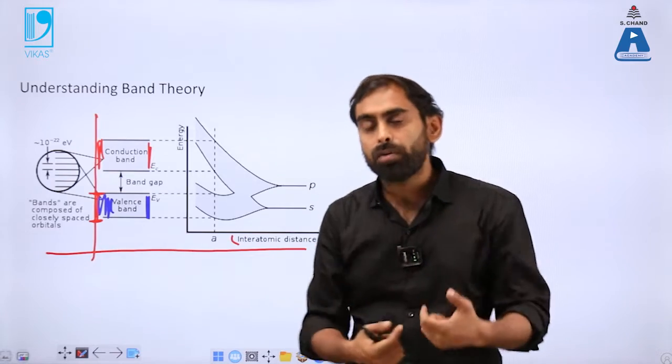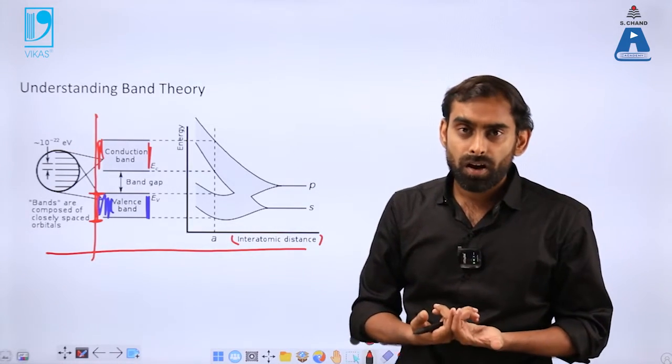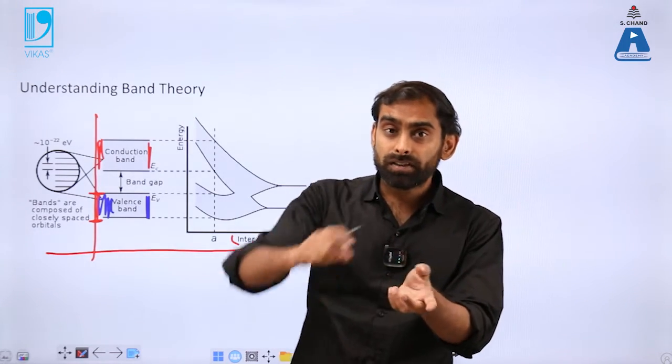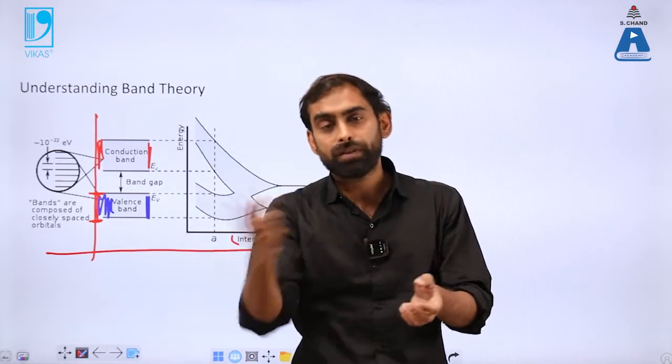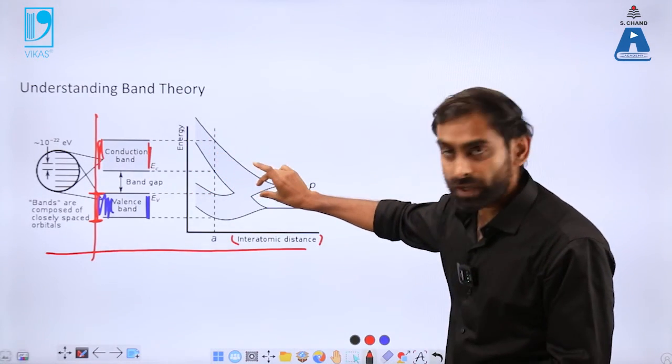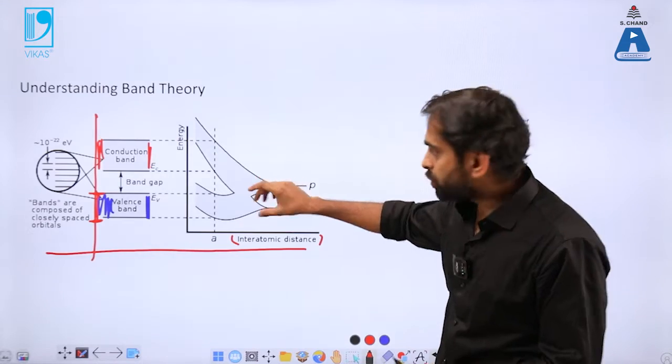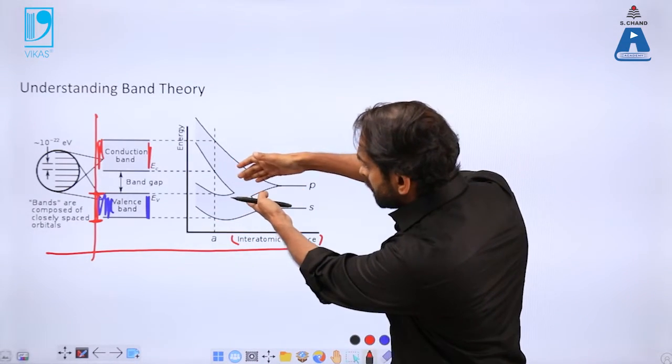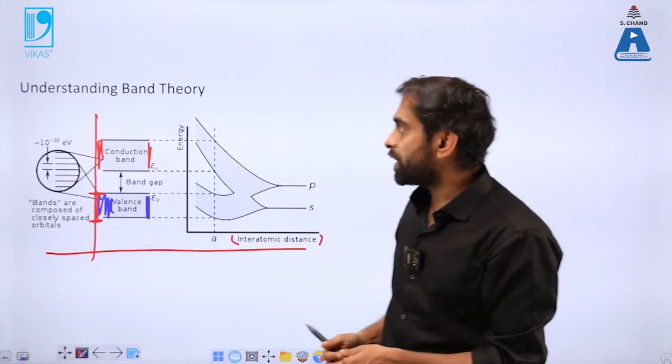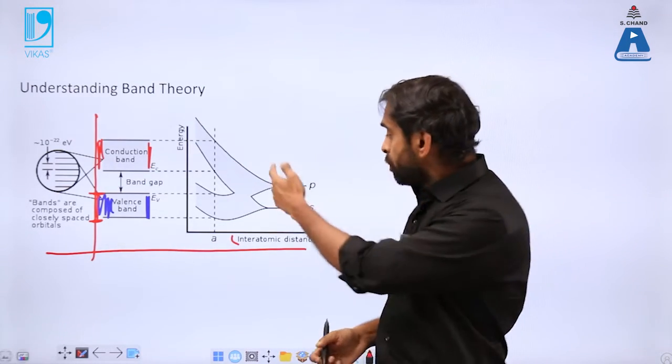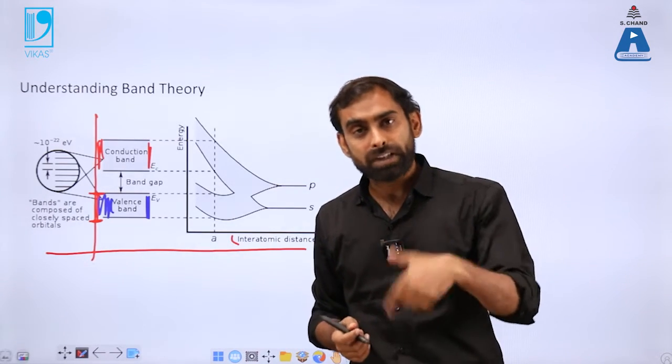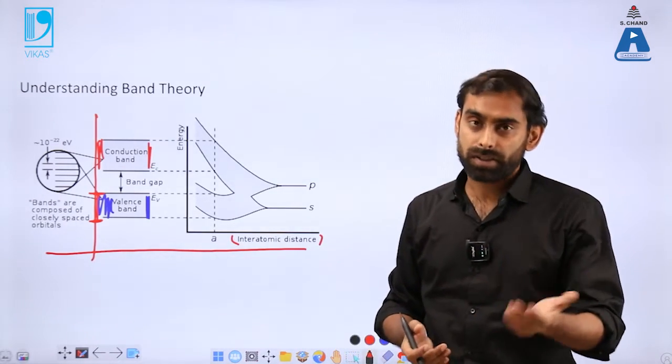You can imagine electrons from one atom can freely move to another atom - that is the point where these two bands can actually converge into single band. This is the relationship of these two bands with inter-atomic distances, and that makes certain molecules conductive and certain molecules non-conductive.